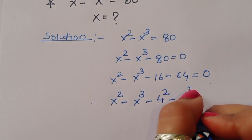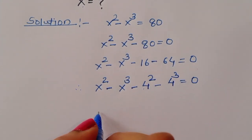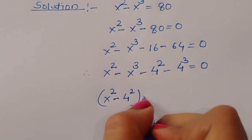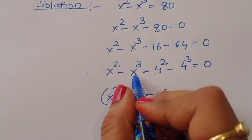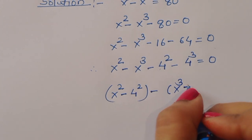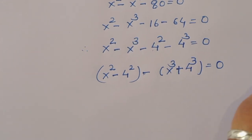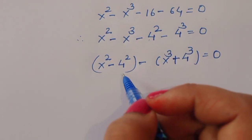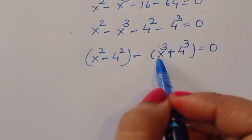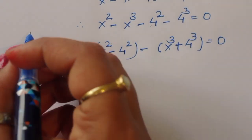So now we are arranging our terms: x squared minus 4 squared, then minus x cubed — taking minus common — so x cubed becomes plus, minus plus, minus 4 cubed, is equal to 0. Now we have two formula forms: a squared minus b squared, and here a cubed plus b cubed.